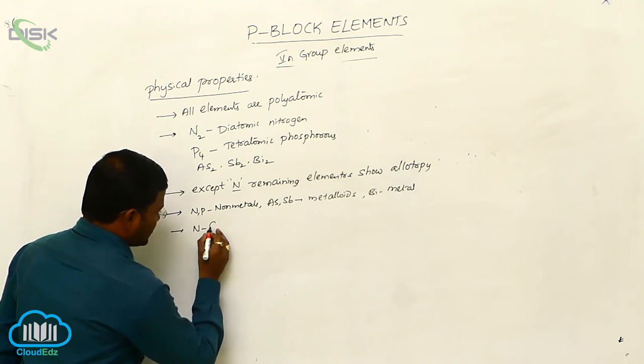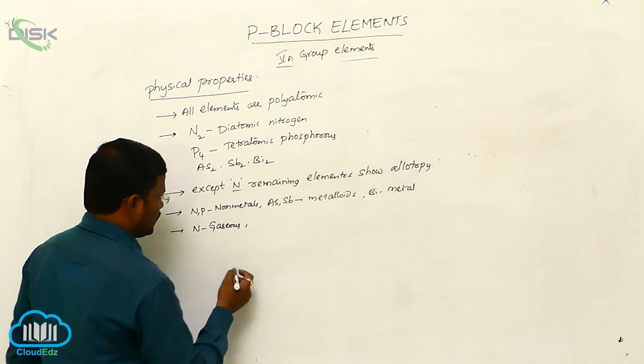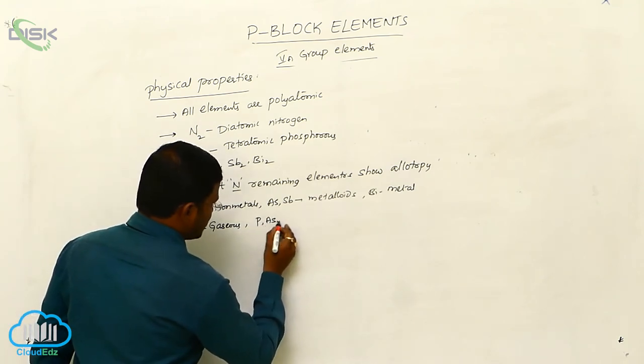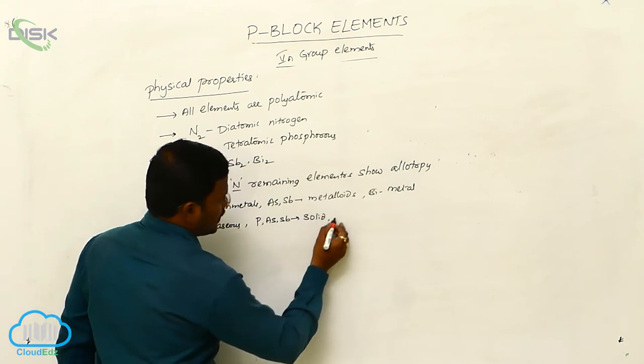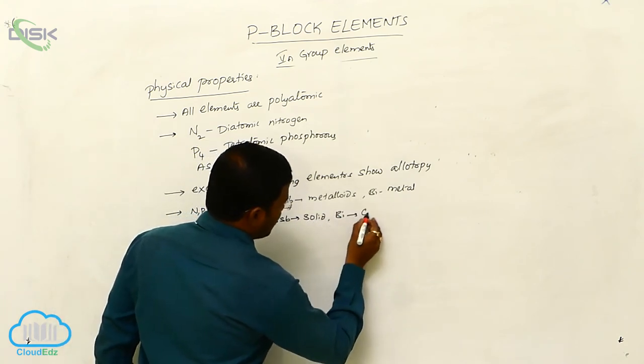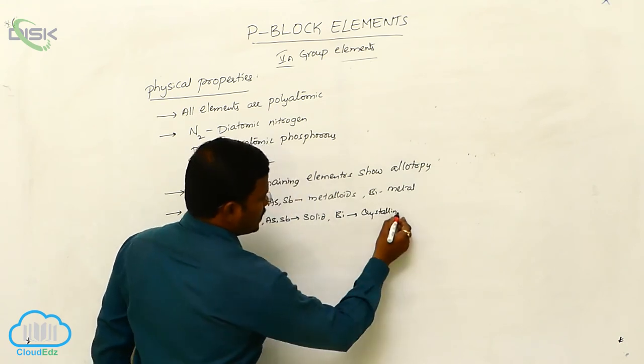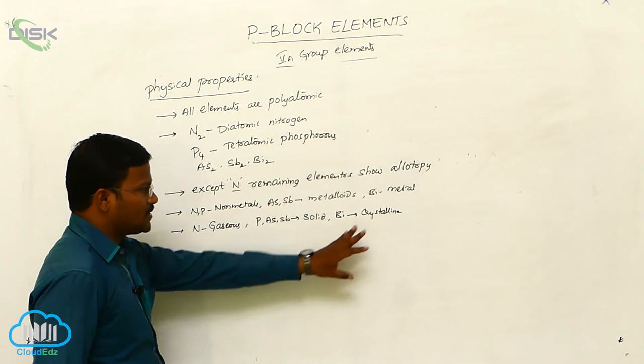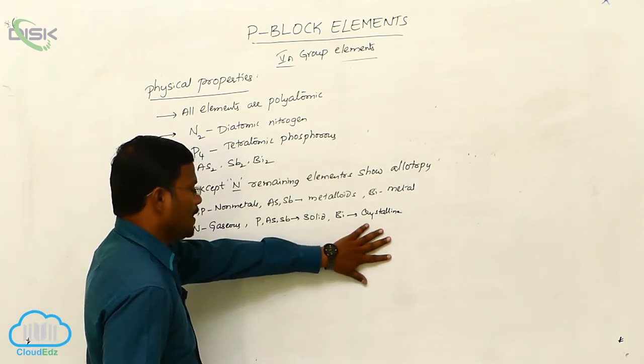Nitrogen present in gaseous state. Whereas, phosphorous, arsenic, stibium present in solid state and bismuth in its crystalline form, crystalline state. That means it is also solid, but metal properties will be exhibited by bismuth.